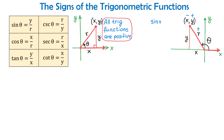And if sine is positive, then the reciprocal, which is cosecant, is also positive. Cosine of theta is x over r, and because x is negative and r is positive, negative divided by positive is negative, therefore cosine is negative, and so is secant. Tangent of angle theta is y over x, and because y is positive and x is negative, positive divided by negative is negative, therefore tangent is negative. So tangent and cotangent are both negative.